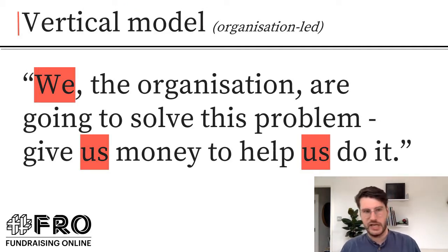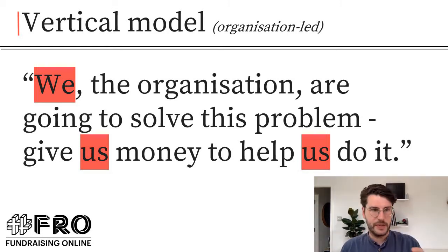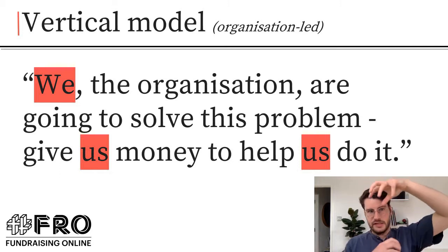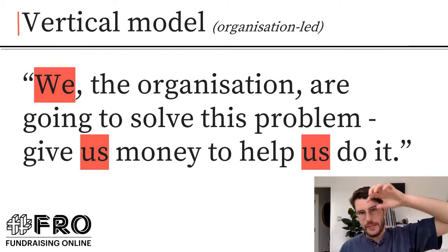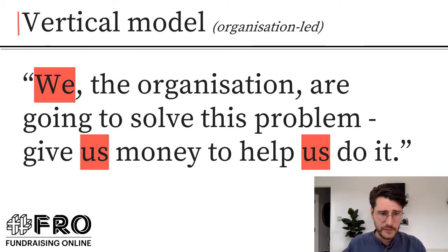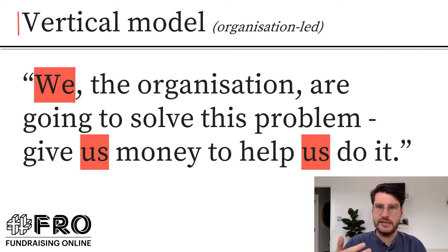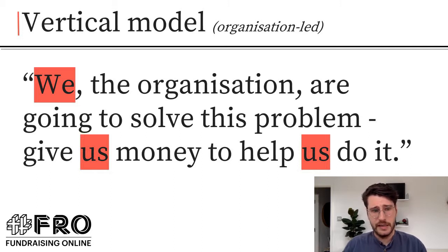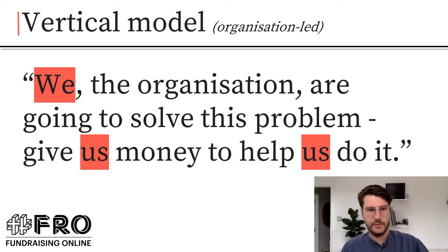In the vertical model, the theory of change goes: we, the organisation, are going to solve this problem — give us money to help us do it. This creates a vertical hierarchy where the organisation is the hero and has the power to solve the problem on its own. It creates a distance between the organisation and the supporter; as a supporter, you don't feel a direct stake in what the organisation does. Your impact as a supporter can only ever be secondary — you can't have direct impact yourself, only by giving money so the organisation can act on your behalf, which is quite disempowering.